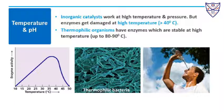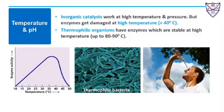Inorganic catalysts work at high temperature and pressure, but enzymes get denatured at temperatures above about 40°C. Thermophilic organisms, however, have enzymes which are stable at high temperatures like 80–90°C. There are special thermophilic bacteria which possess these enzymes.